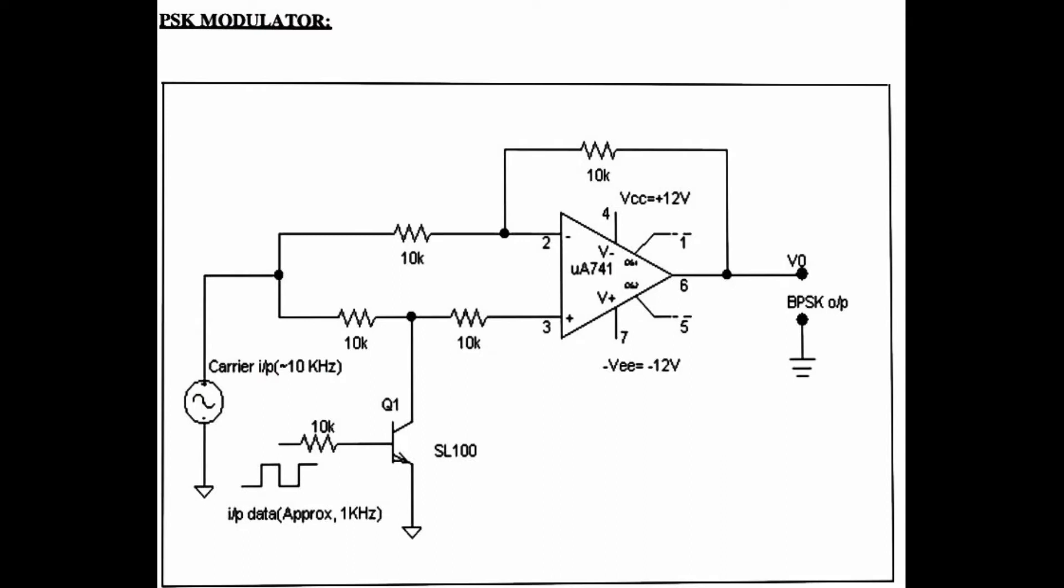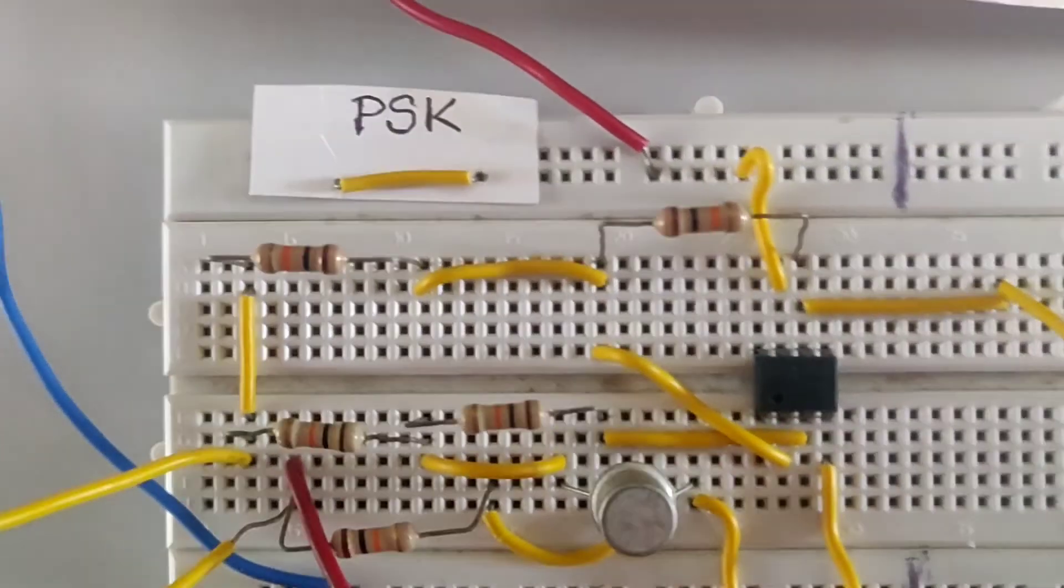Now, go through the circuit diagram. You can see that a square waveform is applied at the base of the transistor.